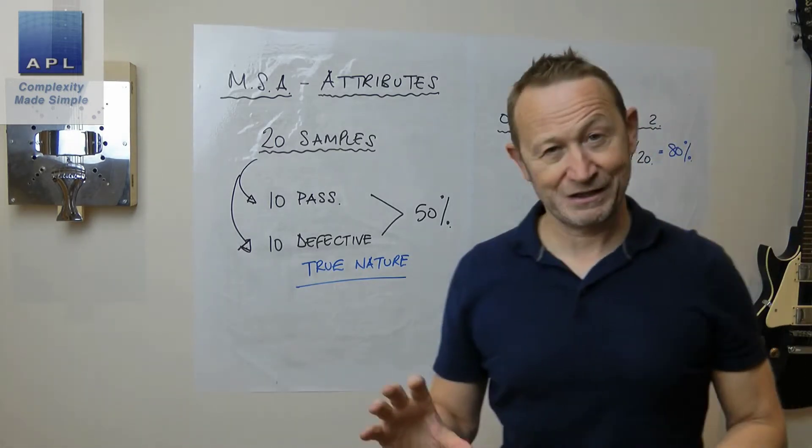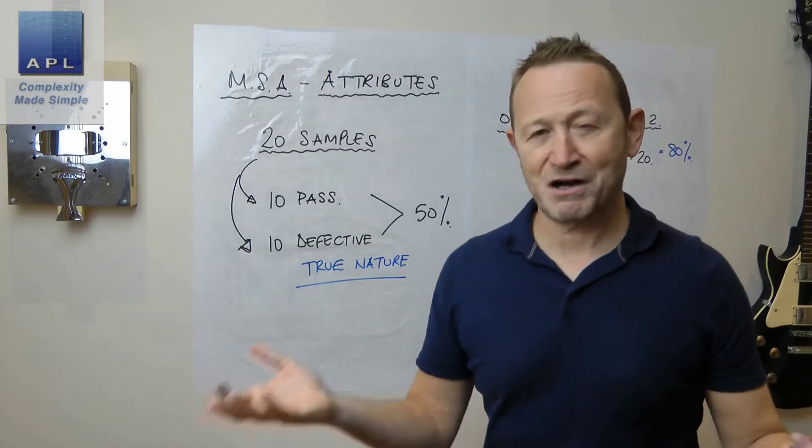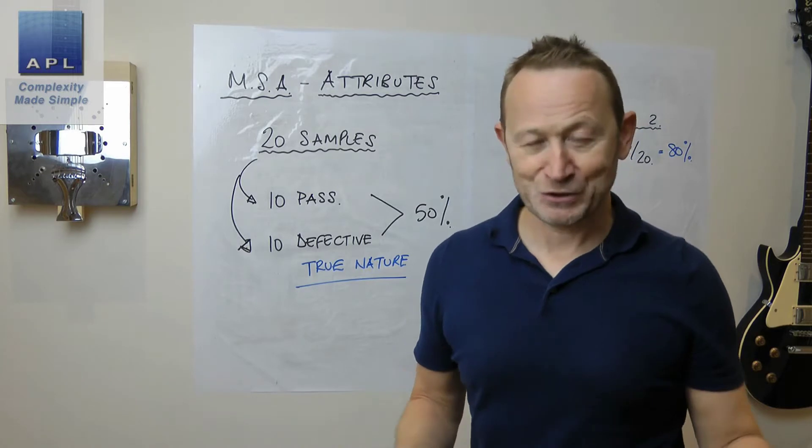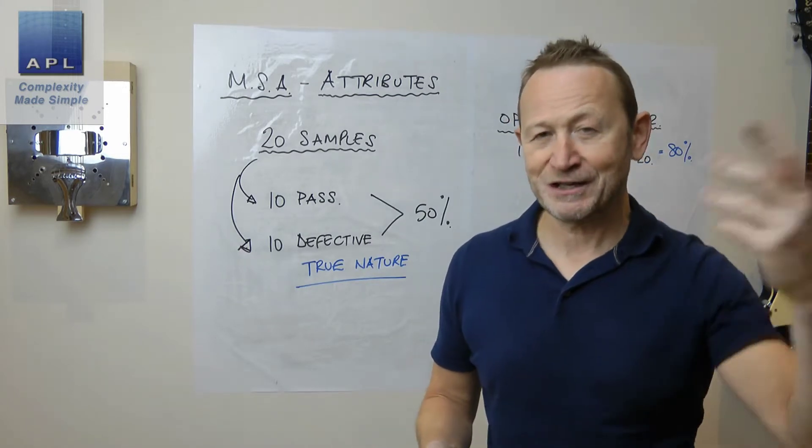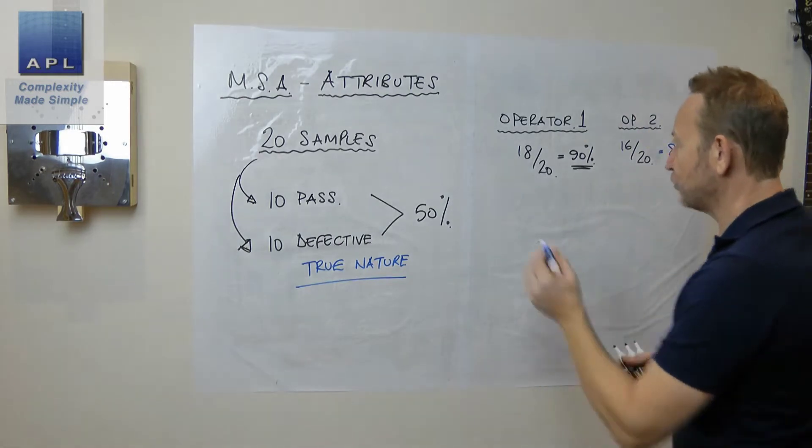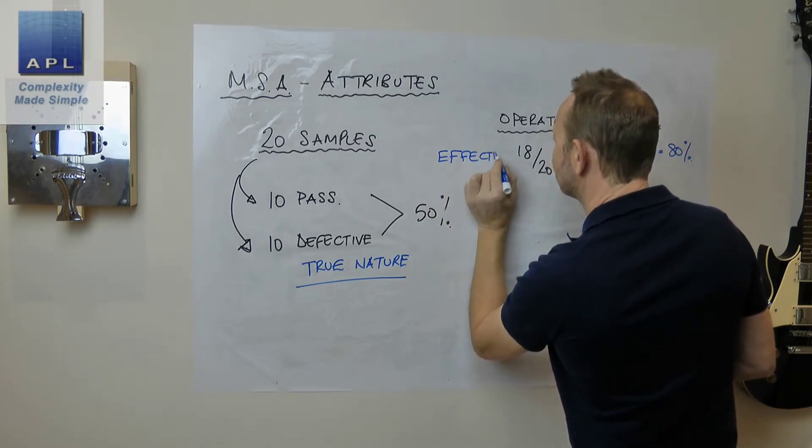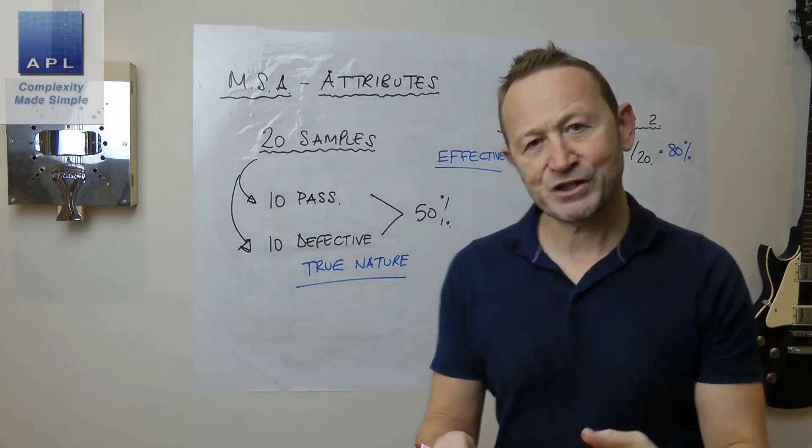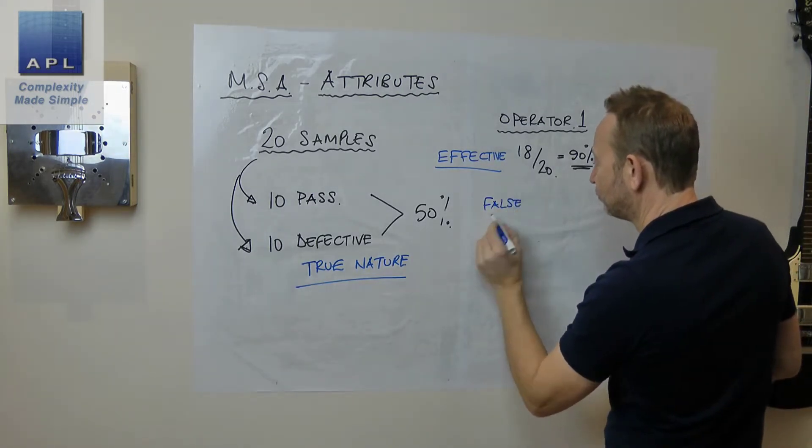Now, by the way, 80% is still an acceptable system. People often look at these numbers and they think, well, I want it to be 100% correct. When you're doing cosmetic inspection, it's never going to be 100% correct. And 80% is the cutoff. If you're below 80%, that's the point where you'd want to do some improvement work on this. So first of all, the first thing we've worked out there is what's known as the effectiveness. How effective are the measurement systems?